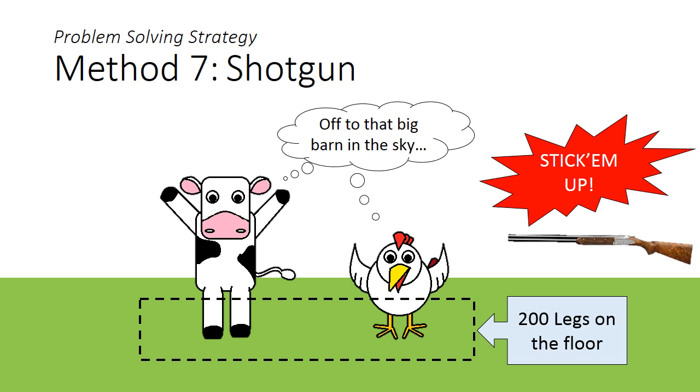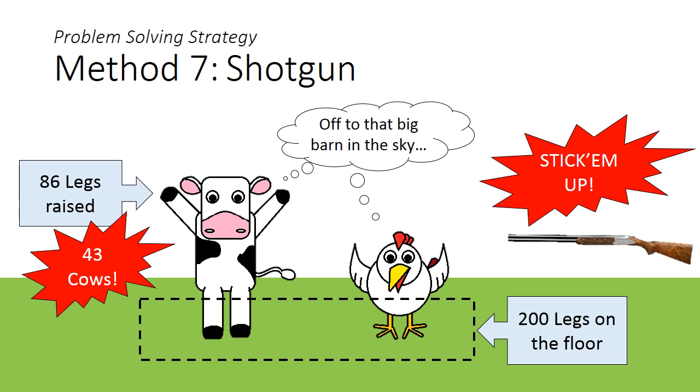All together, the 100 animals have 200 legs on the ground. That must mean that the 86 legs left over must belong to the cows. Divide that by 2, and we find that we have 43 cows.